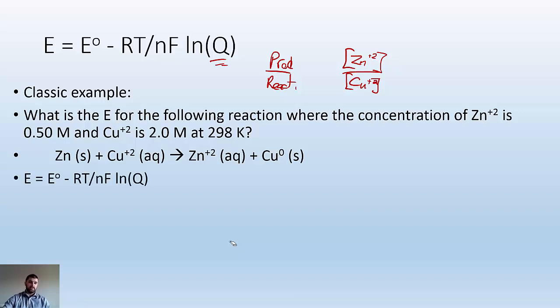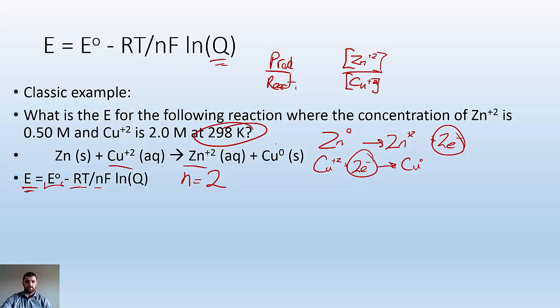Now we recall this equation. We're figuring out E. We need E naught, which you look up. R is 8.314, T is 298 Kelvin. Zinc goes from 0 to +2 by losing 2 electrons, and copper goes from +2 and gains 2 electrons to become copper 0. How many electrons are being transferred? 2. So N equals 2. F is a constant.